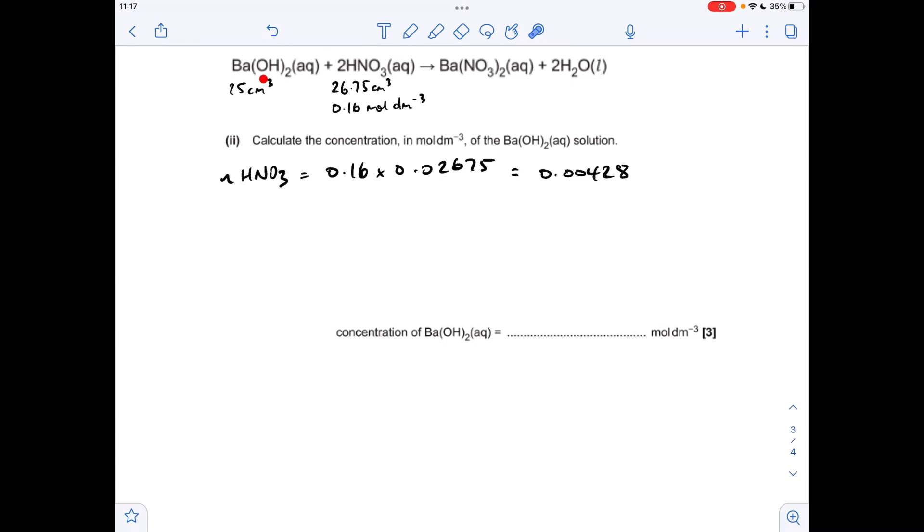The moles of barium hydroxide will be half as many because of the ratio. So we've got 0.00214 moles of barium hydroxide. Well that's in 25 cm cubed. So concentration is moles divided by volume. So that's coming out with a concentration of 0.0856 moles per decimetre cubed.